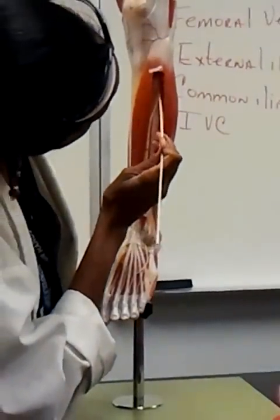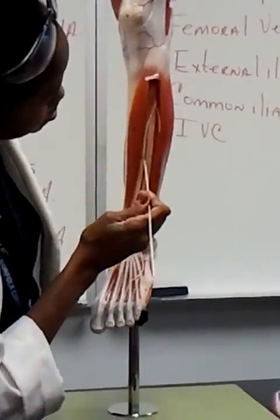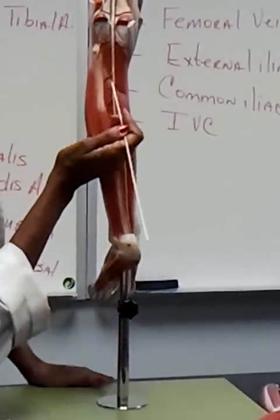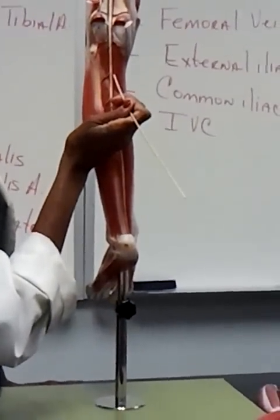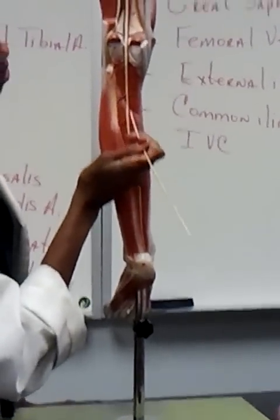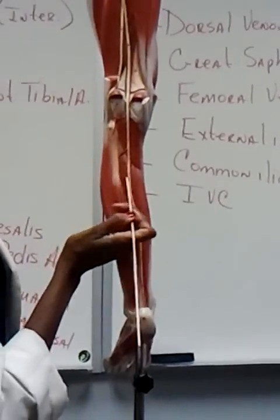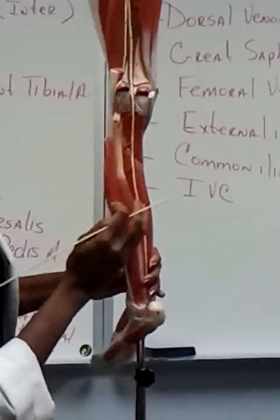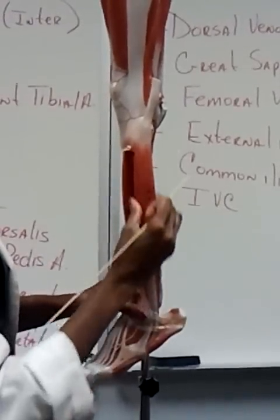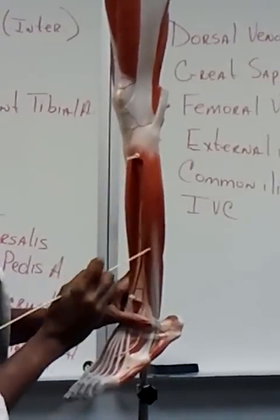As it comes out, that's going to be your anterior tibial artery. Once that branches, this becomes posterior tibial artery. Then posterior tibial artery gives off this branch. This is your peroneal artery. That artery dives and stays in the lateral compartment, so it supplies these muscles here.